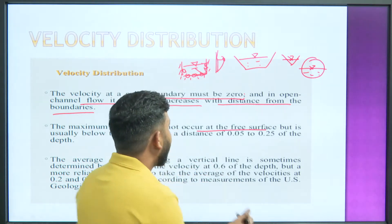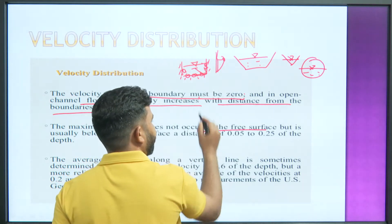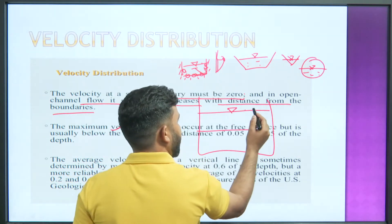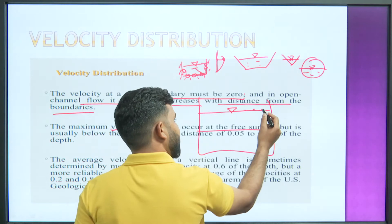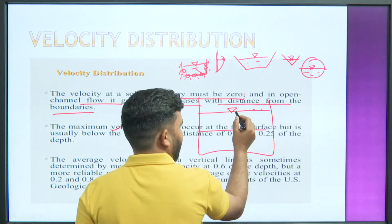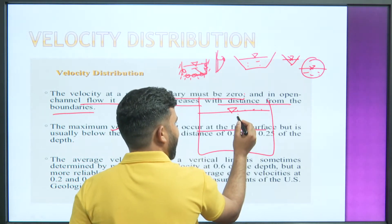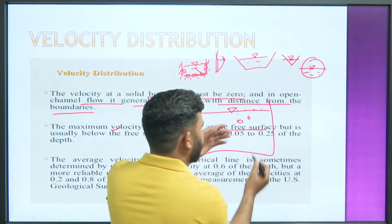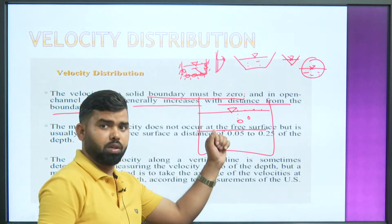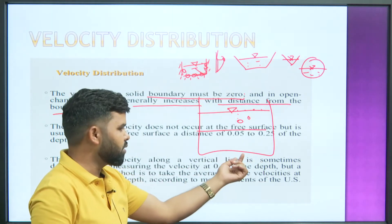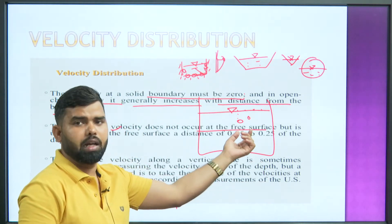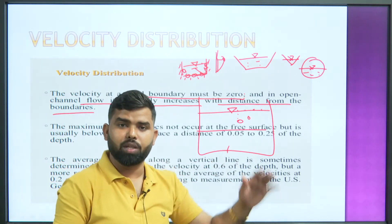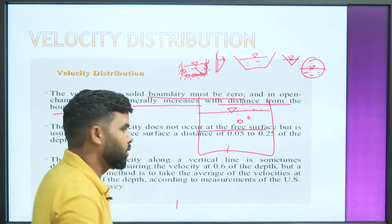But if the speed of the surface layer is slightly reduced — consider here is the free surface — then the particles just below the free surface will have the highest velocity. Because they are neither at the top nor at the bottom, they are in between, and thus maximum velocity is found somewhere below the free surface, not at it.